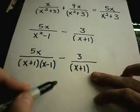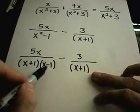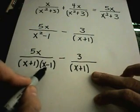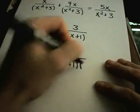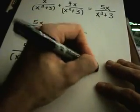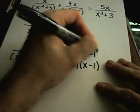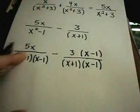But notice, if I look at the right one and compare that to the left one, there's an x minus 1 in the denominator of the left one that's not in the denominator of the right one. Well, I would like to have that x minus 1 there. So that means I also have to multiply the numerator by x minus 1.